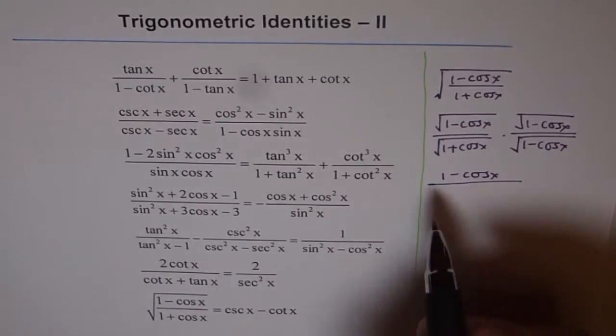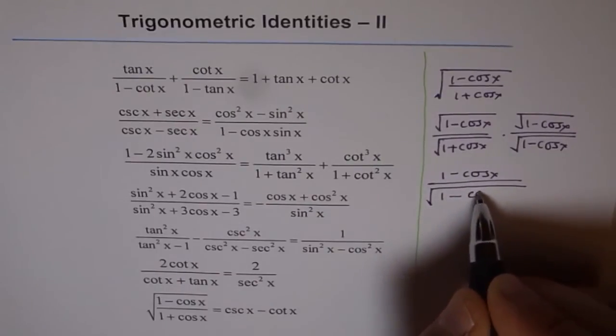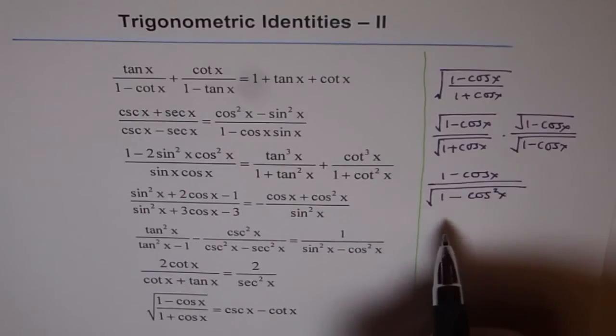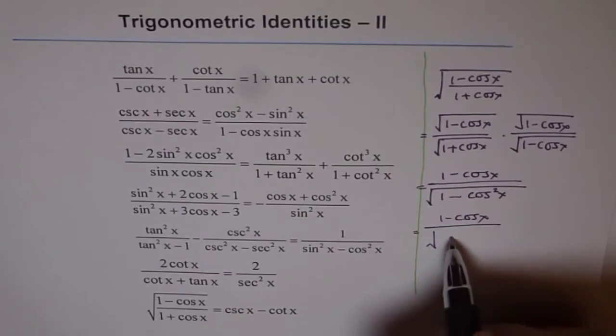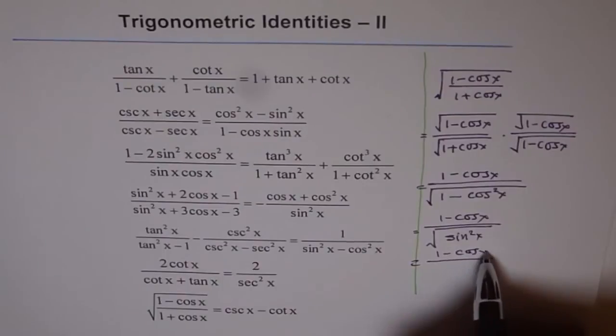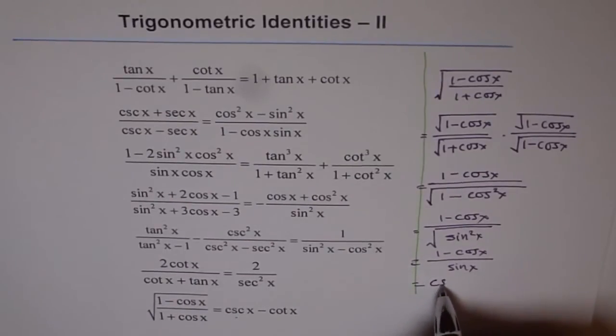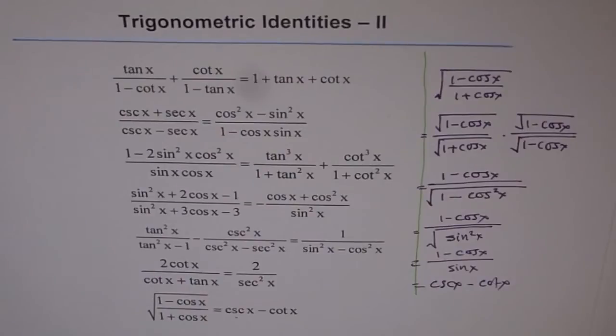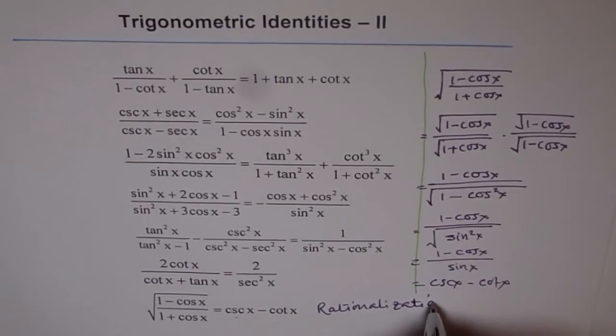So when you do that, then the numerator becomes a square root of something and square root of the same thing. So in the numerator, you get 1 minus cos x. And the denominator gives you, within the square root, a square minus b square, which is 1 minus cos square x. And from Pythagorean identities, you know, this is sin square x. So you get square root of sin square x, which is sin x. So 1 minus cos x over sin x. This is cosecant x minus cotangent x. And that is your right side.